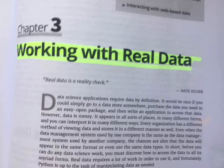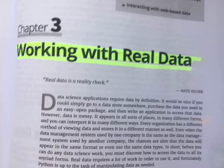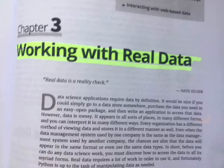Nate Silver. Data science applications require data by definition. It would be nice if you could simply go to a data store software, purchase the data you need in an easy open package, and then write an application to access that data. However, data is messy. It appears in all sorts of places in many different forms, and you can interpret it in many different ways. Every organization has a different method of viewing data and stores it in a different manner as well.